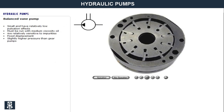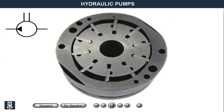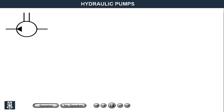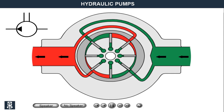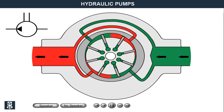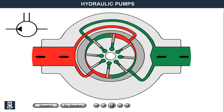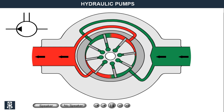Balanced vane pumps have a cylindrical rotor with radial grooves where freely movable vanes are placed. The rotor is placed in the centre of an oval pump housing, which has two inlet and outlet channels. One gets an even load of the rotor bearings, which is why this type of vane pump is called balanced. When the rotor works, the vanes are thrown out against the pump housing's walls and bring oil along.